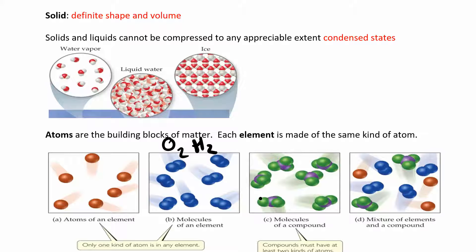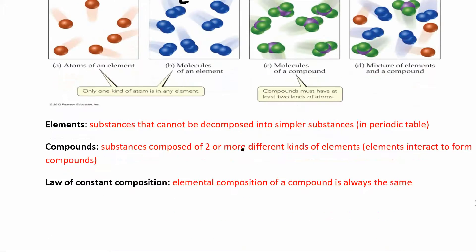You can also have molecules of a compound — one central atom with three of the same atoms around it, or many different combinations. A compound has two different types of atoms, two different types of elements. You can also have a mixture of elements and a compound. Elements are substances that cannot be broken down into simpler substances — if it's on the periodic table, it's an element.